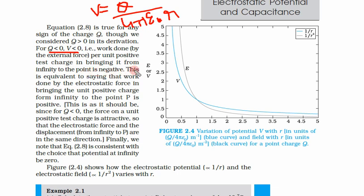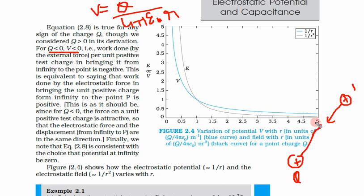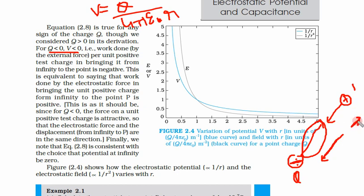Why is it negative? Suppose charge q is positive and you are bringing a positive test charge — you have to work against it because it repels the test charge. But if the test charge itself is negative, it will be attracted, so to overcome this attraction you have to put some work in the opposite direction.